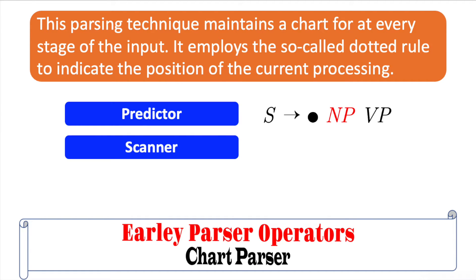The scanner operator is called to check the input or incorporate a state corresponding to the predicted word with a particular part-of-speech into the chart when a state has a part-of-speech category to the right of the dot. This is accomplished by creating a new state from the input state with the dot advanced over the predicted category.